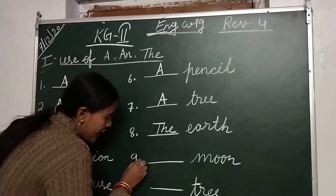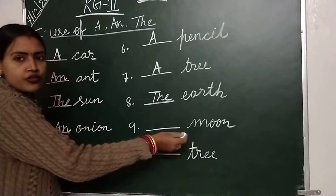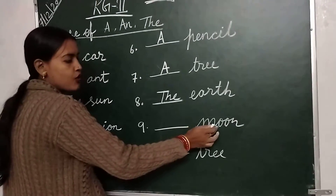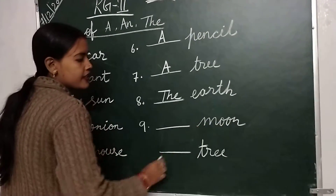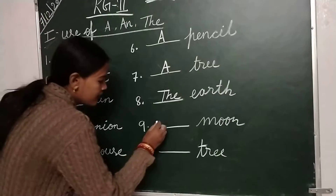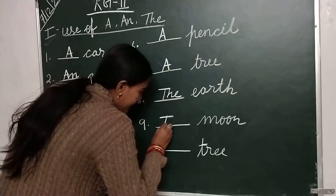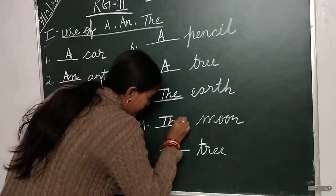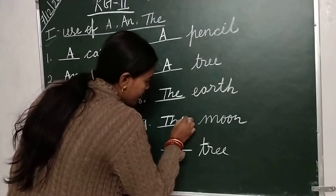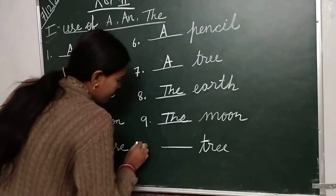Next, number 9 is moon. M-O-O-N, moon. Write down: the moon.